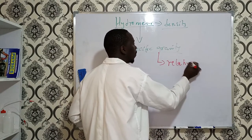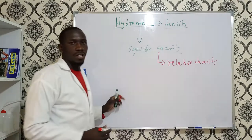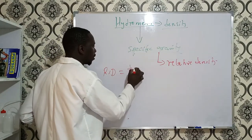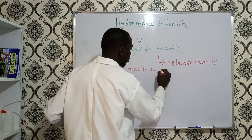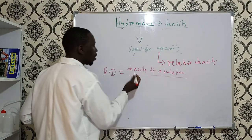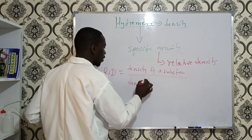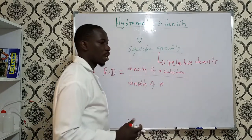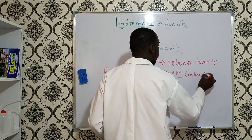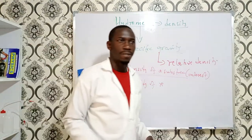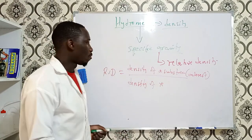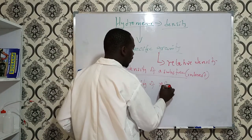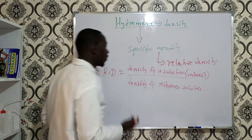Relative density is the ratio of the density of a substance divided by the density of a reference substance. The substance of interest could be water, oil, or a sugar solution — whatever density we are looking for — divided by the density of the reference substance.